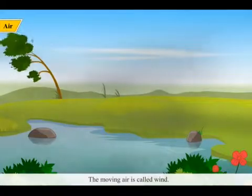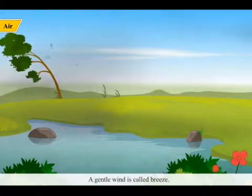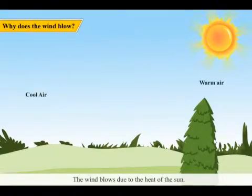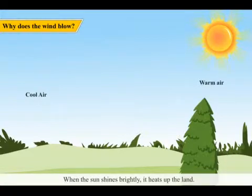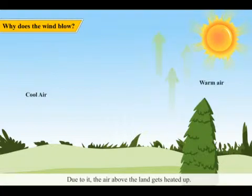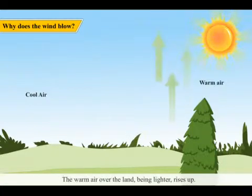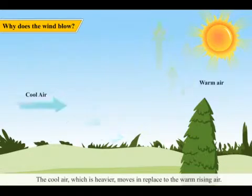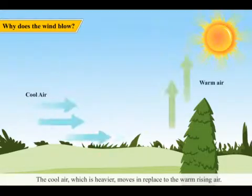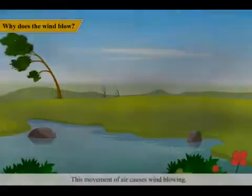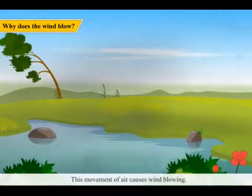The moving air is called wind. A gentle wind is called breeze. The wind blows due to the heat of the sun. When the sun shines brightly, it heats up the land. Due to it, the air above the land gets heated up. The warm air over the land, being lighter, rises up. The cool air, which is heavier, moves in to replace the warm rising air. This movement of air causes wind blowing.